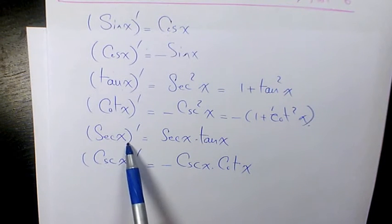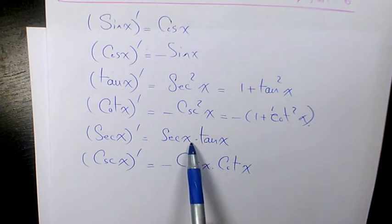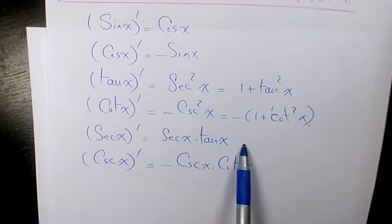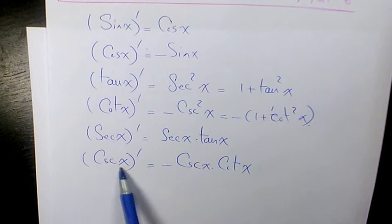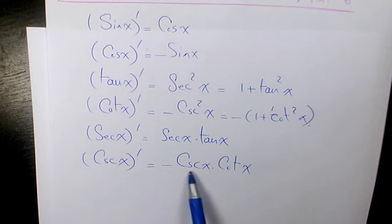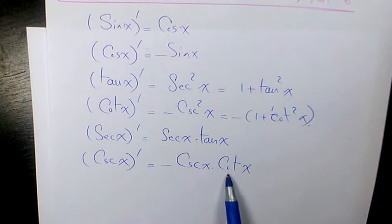Derivative of secant x is going to be secant x times tan x. And finally, the derivative of cosecant x is negative cosecant x times cotan x.